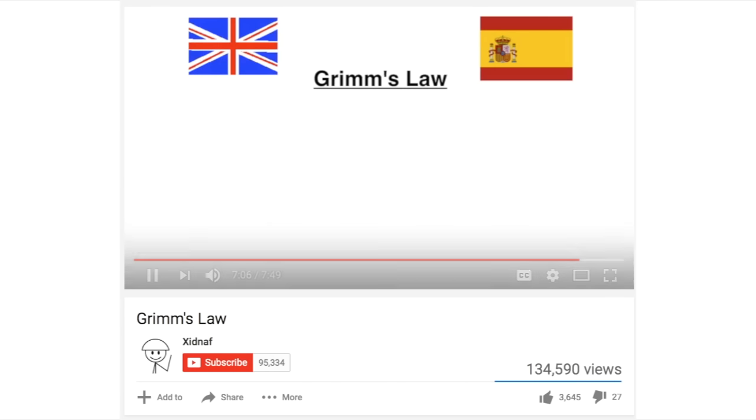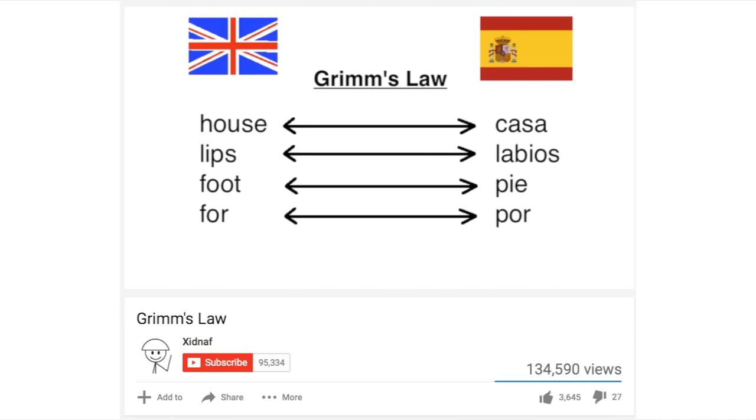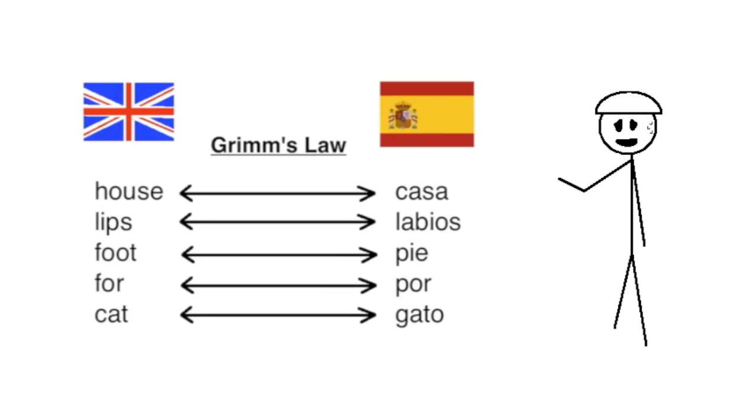Number eleven. Grimm's Law also explains house versus casa, lips versus labios, foot versus pie, four versus por, cat versus gato. I was just jotting down whatever came to mind here, and it turns out Grimm's Law isn't actually responsible for half of these. We don't actually know where the word house comes from, and cat was actually a borrowing from the Latin cactus.